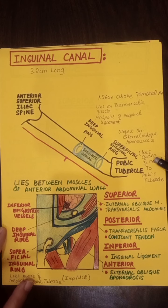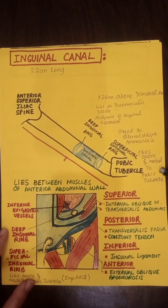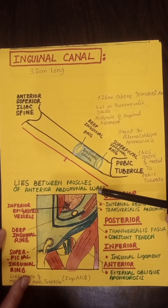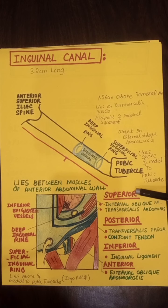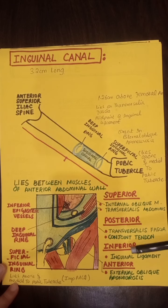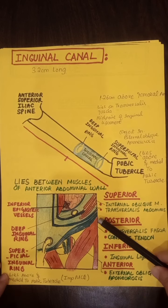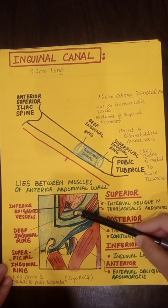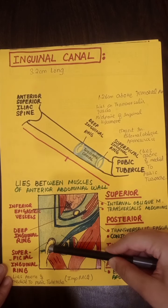An important MCQ: what is the location of the superficial inguinal ring? It lies above and medial to the pubic tubercle. The superficial inguinal ring is a V-shaped ring present on the aponeurosis of the external oblique muscle.